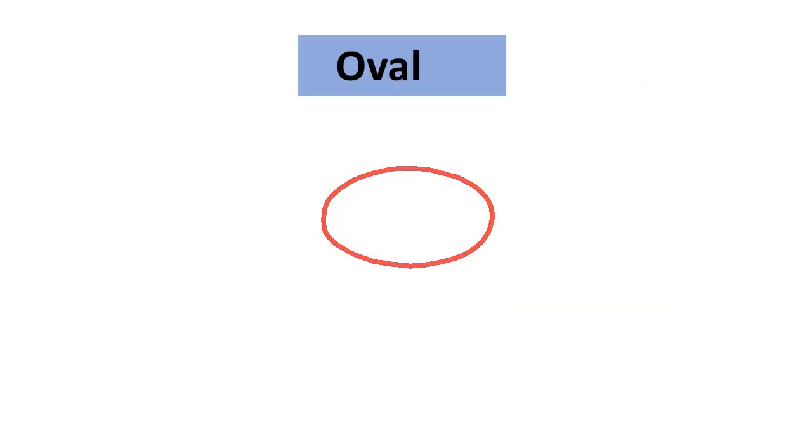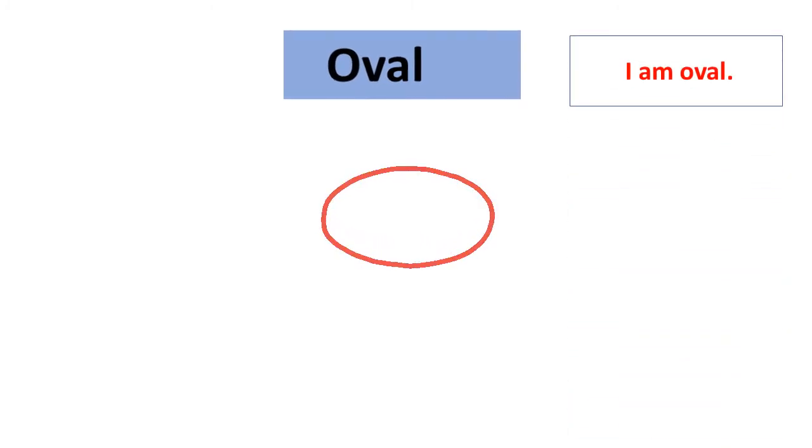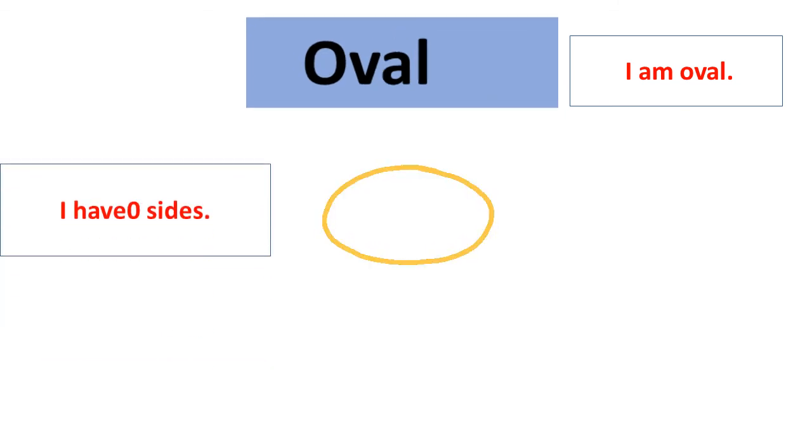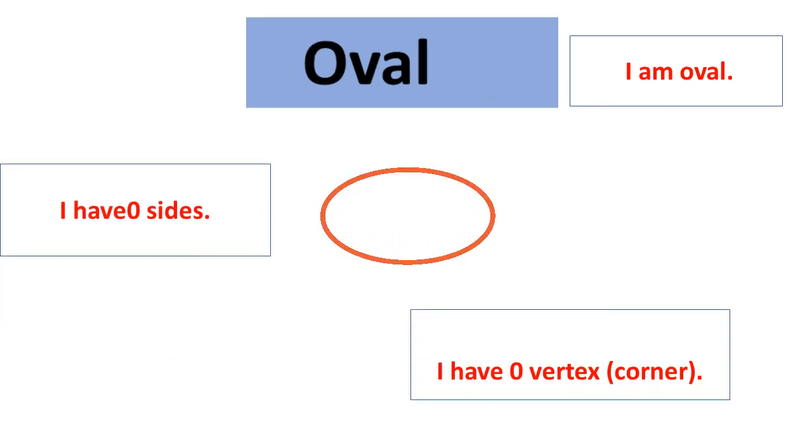This is an oval. I am an oval. I have zero sides and zero vertices.